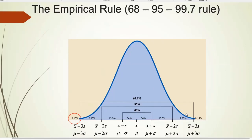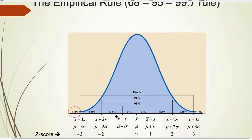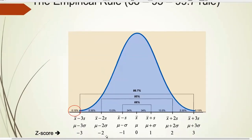The empirical rule is only an approximation of the z-table. It only gives you values for plus or minus 1, 2, and 3. It won't help if you're dealing with something like 1.94 or minus 2.770, because it only handles whole numbers — plus or minus 1, 2, and 3.